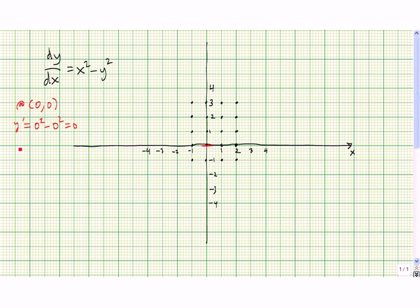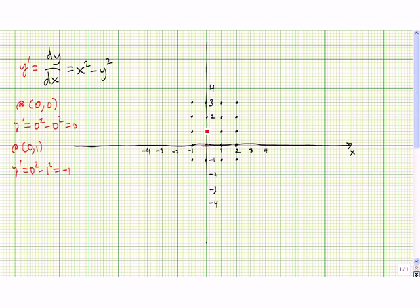Now let's go to the point (0,1). Y prime is equal to 0 squared minus 1 squared, because y prime is dy/dx and it's x squared minus y squared. So 0 squared minus 1 squared is negative 1. So at the point (0,1), we need to draw a little tangent line segment whose slope is approximately negative 1. The negative means it should fall from left to right, and the rise should about equal the run.